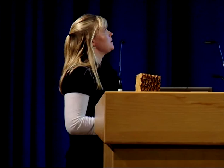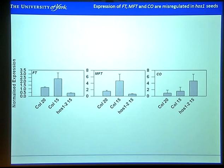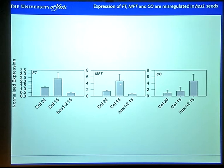We then looked at gene expression of FT and CONSTANS — two flowering time regulators — and also MFT, which has a role in germination. When you reduce the maturation temperature of the seeds, you get an increase in FT expression, but this increase is completely absent in the HOS1 mutant — the levels are even lower than in wild type matured at 20 degrees. We see a similar response for MFT, with more expression in cold-matured seeds, but no induction in HOS1 seeds. Conversely, CONSTANS expression is higher in HOS1 seeds than in wild type, starting to build a mechanism by which HOS1 might be acting, though at this stage it remains preliminary.